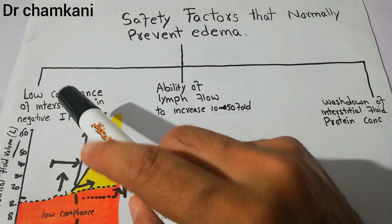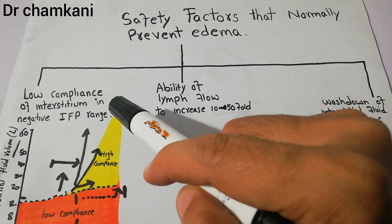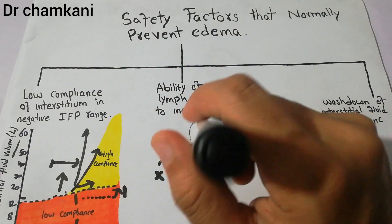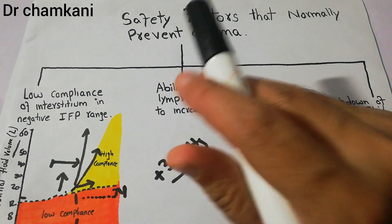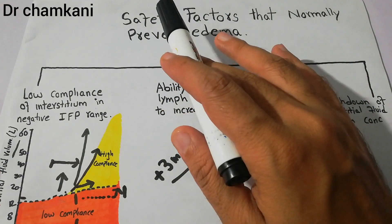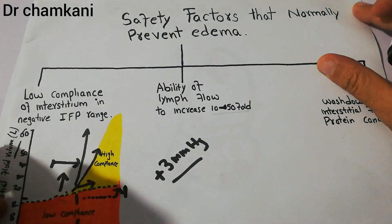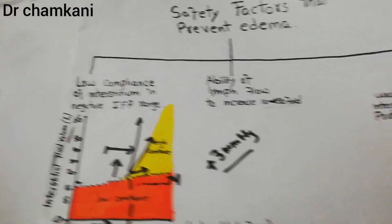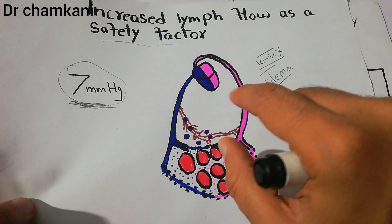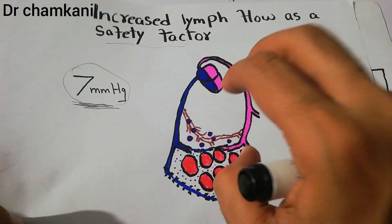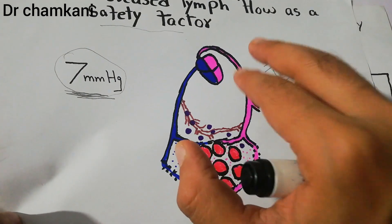The low compliance of interstitium in the negative interstitial fluid pressure range is a safety factor against development of edema. Similarly, the ability to increase lymph flow 10 to 50 fold is a safety factor that prevents edema. Finally, the washdown of interstitial fluid protein is a safety factor — when lymph flow increases it takes away proteins, fats, and extra fluid, decreasing colloid pressure and preventing edema.